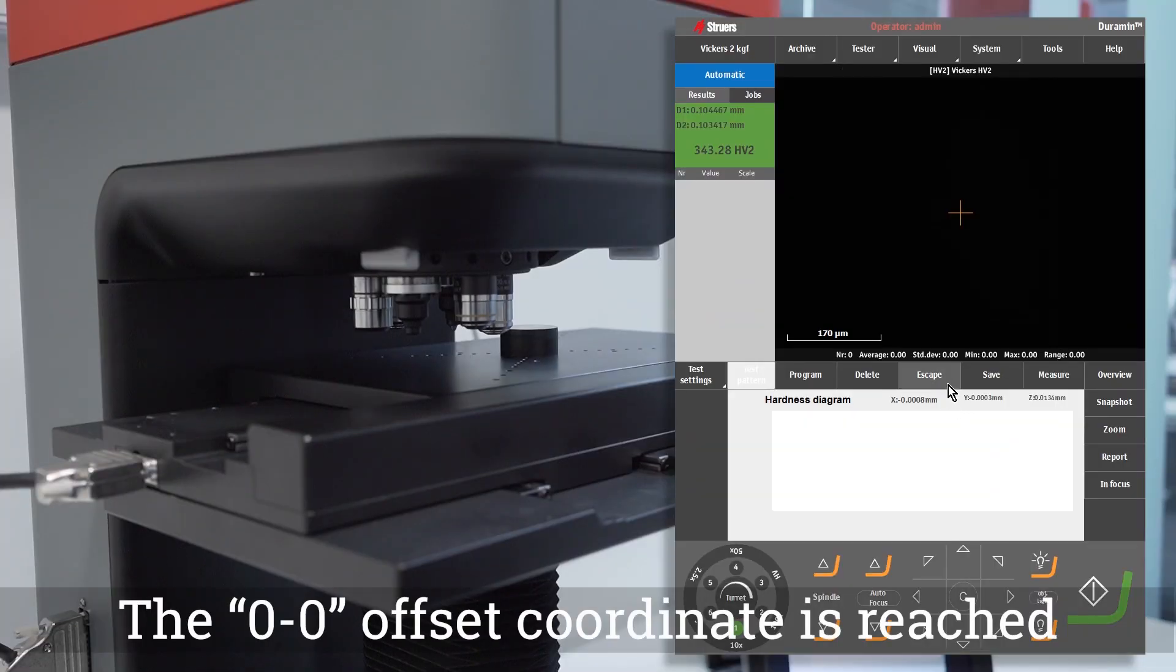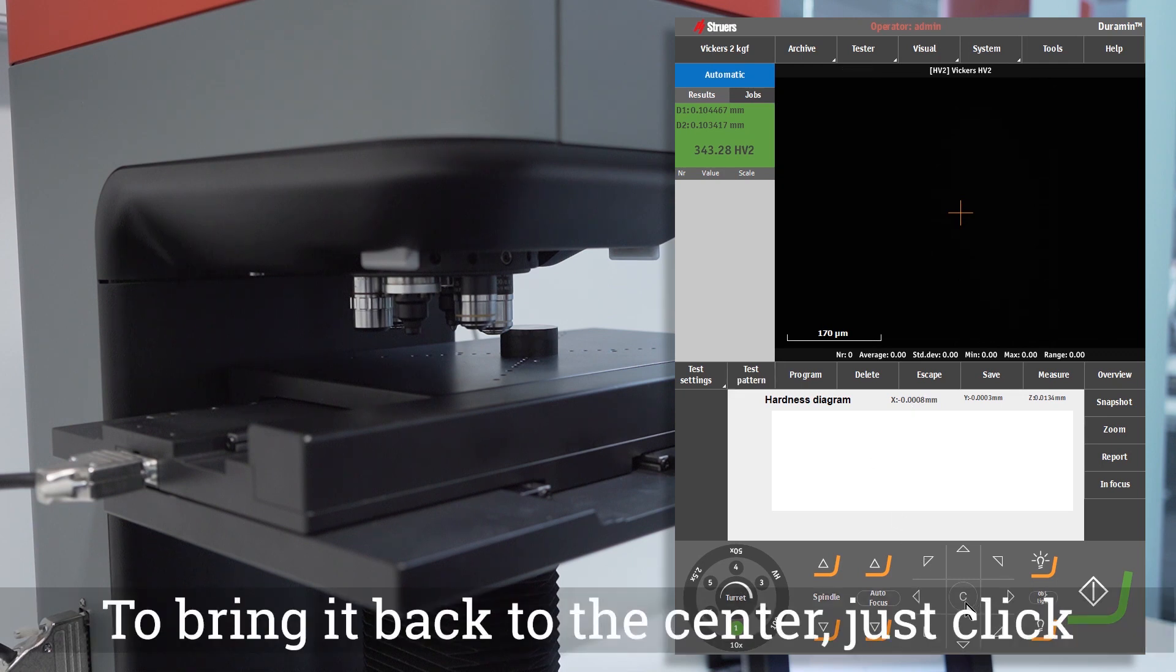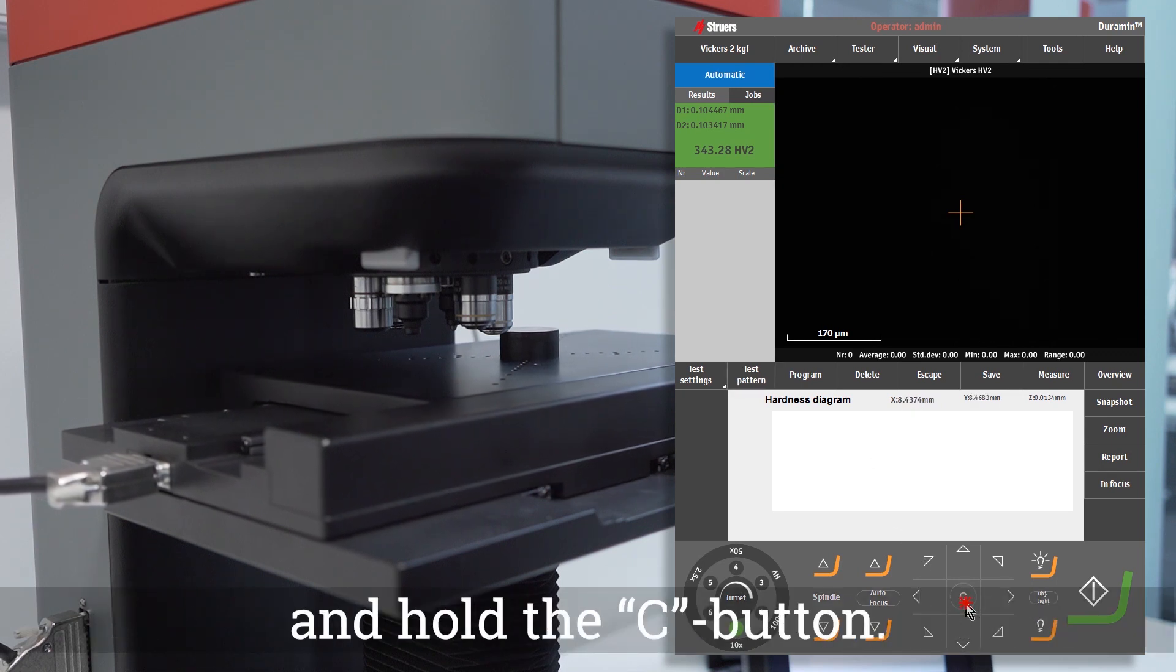The 0-0 offset coordinate is reached when the stage moves all the way up to the right. To bring it back to the center, just click and hold the C button.